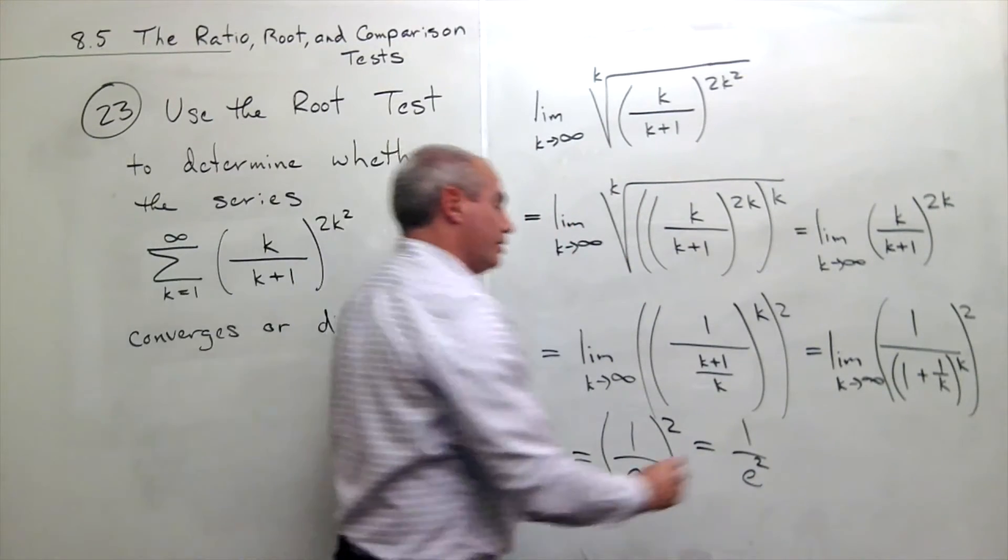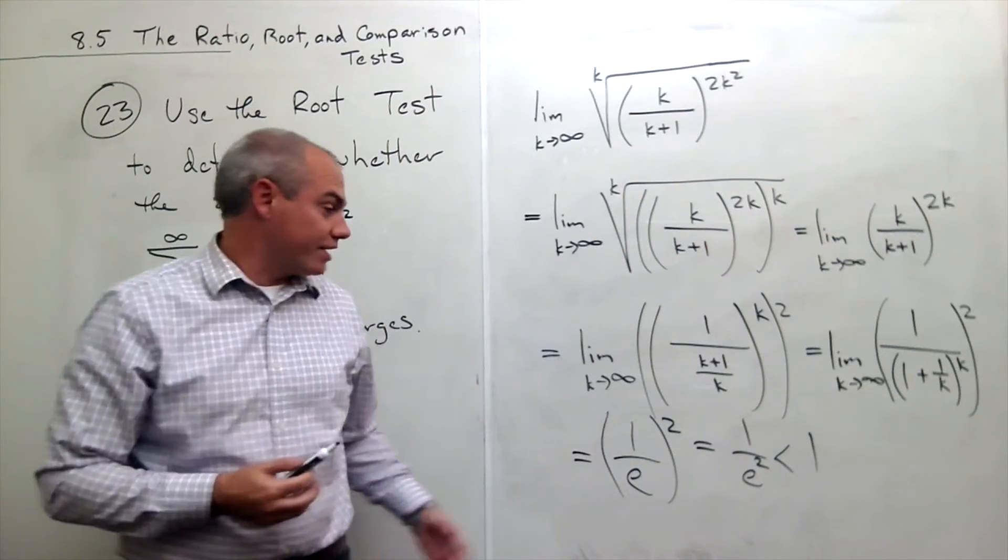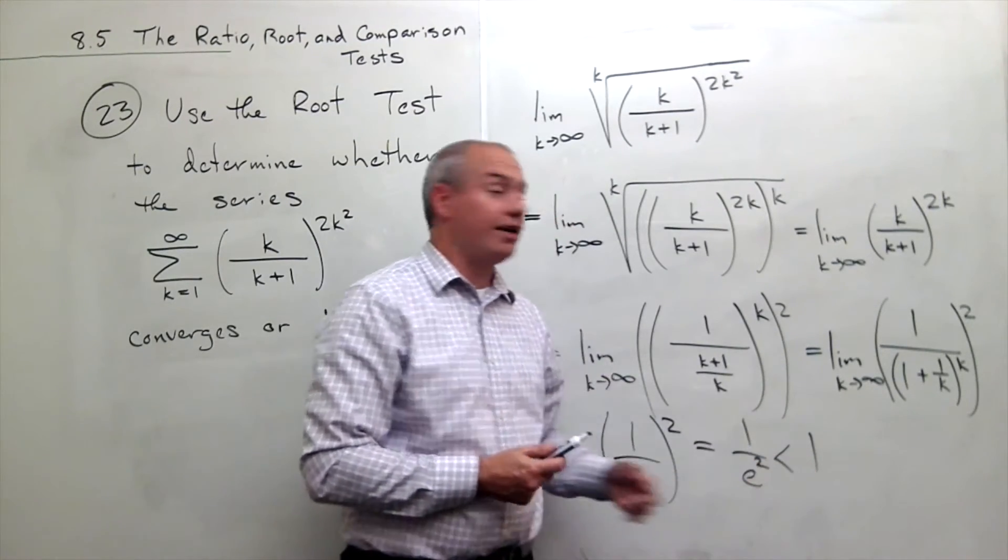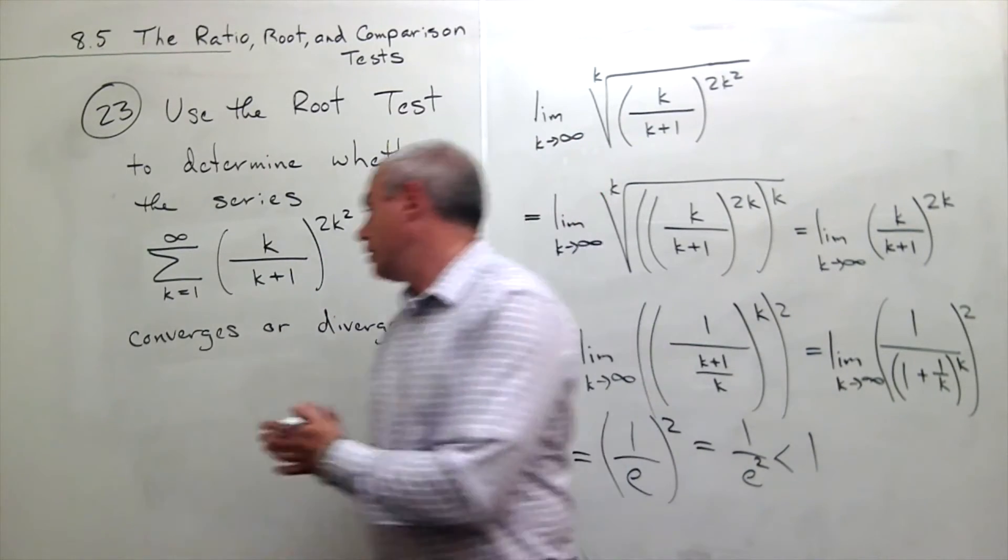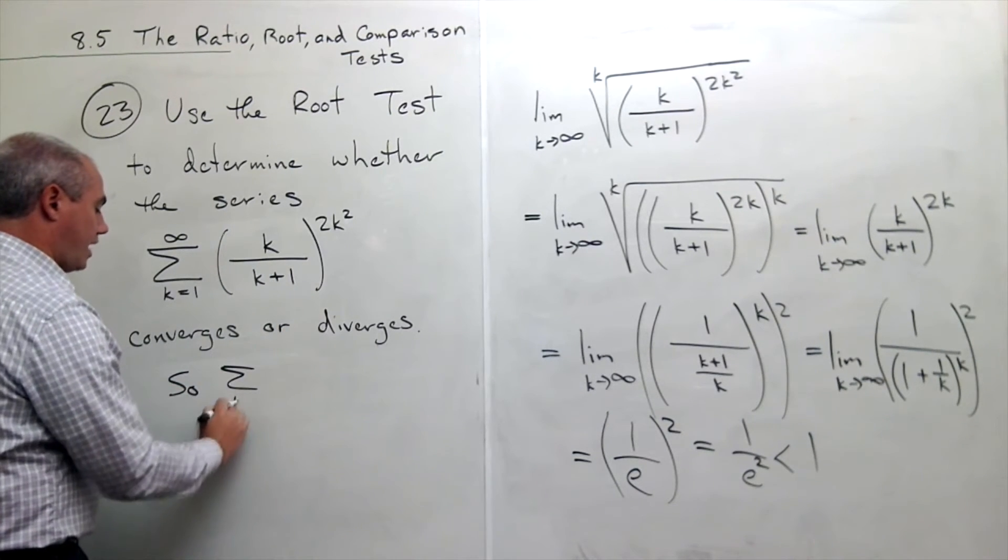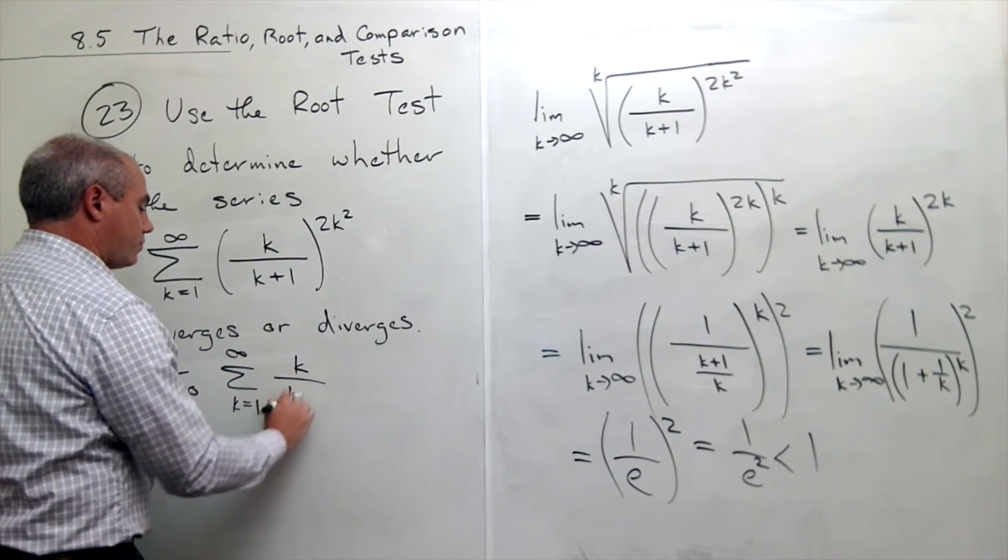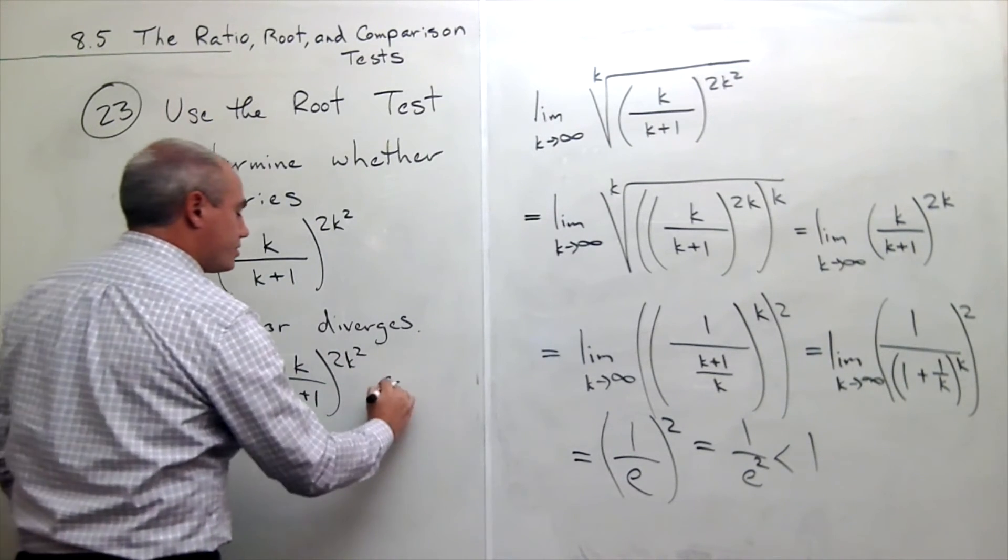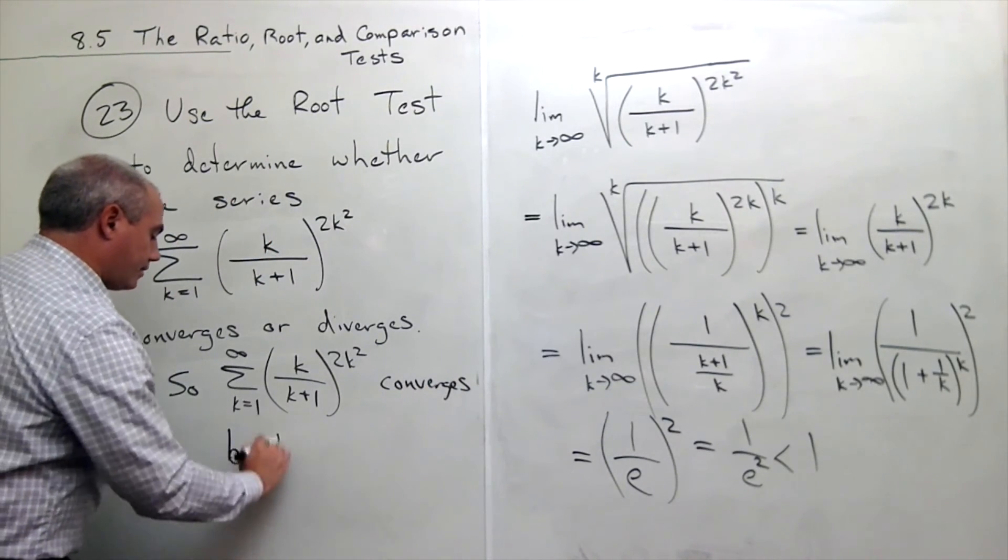1 over e squared is less than 1. And I know that if something is less, if the result of my root test is less than 1, then the series that I started with must converge. So my conclusion on this is the sum k going from 1 to infinity of k over k plus 1 raised to the power 2k squared converges by the root test.